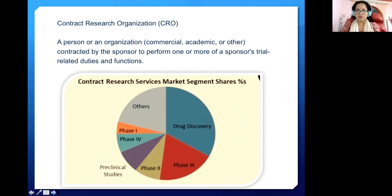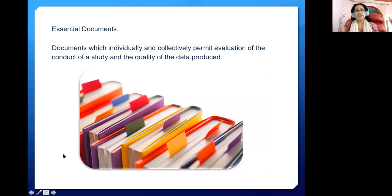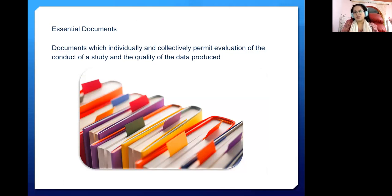Essential documents are documents that individually and collectively permit evaluation of the conduct of a study and the quality of the data produced. They are divided into three categories: before the study, during the conduct of the study, and after study closure. These documents ensure the study has taken place in a good environment and is ethical.